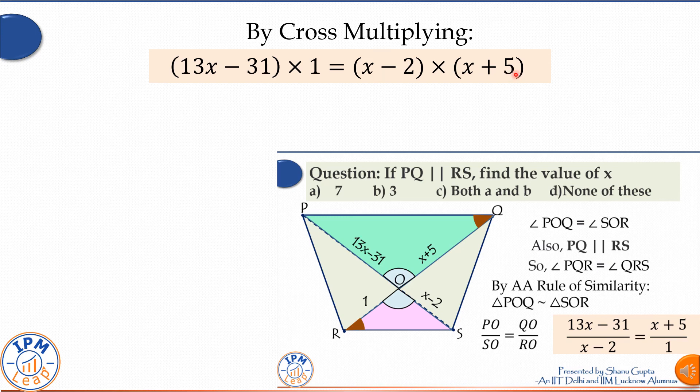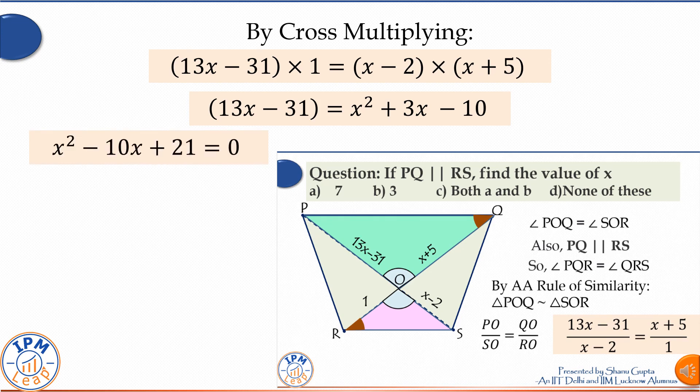and we get 13x - 31 is equal to x² + 3x - 10. This simplifies to a very simple quadratic equation which can be solved easily using factorization method. The coefficients a, b, and c are 1, -10, and 21 respectively.